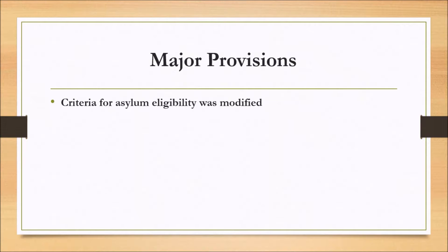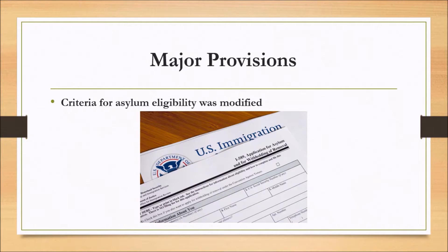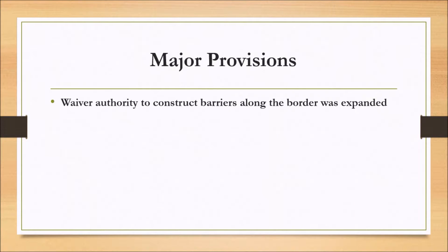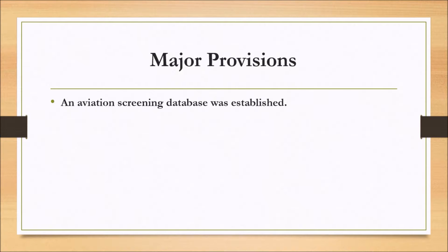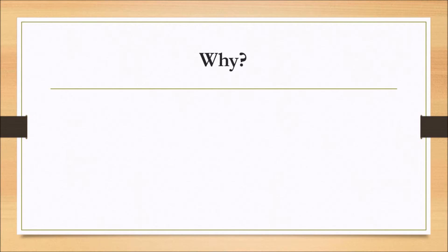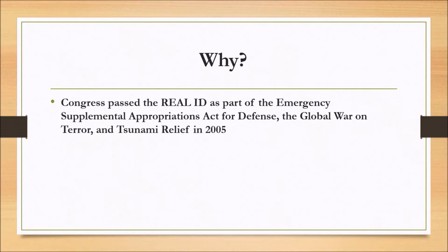The criteria for asylum eligibility was modified. Judicial review of certain immigration decisions were further limited. Waiver authority to construct barriers along the border was expanded. An aviation screening database was established. Congress passed the Real ID Act as part of the Emergency Supplemental Appropriations Act for Defense, the Global War on Terror, and Tsunami Relief in 2005.